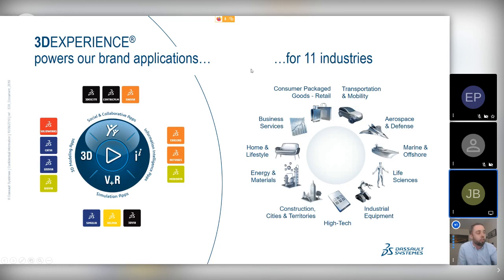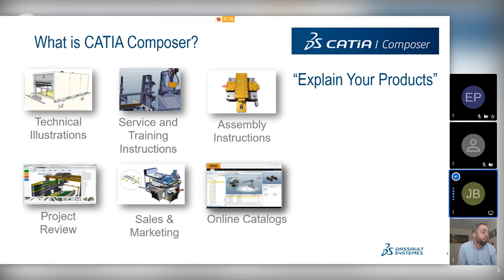The 3D Experience Platform powers specific brands within those quadrants: social and collaborative, 3D modeling, simulation, and information intelligence apps. Today we're focusing on the west quadrant, specifically within CATIA — and specifically within CATIA Composer, which is our 3D technical communication software. We serve 11 specific industries, marrying industry expertise with our applications and tool sets to bring solutions to customers and partners. I'll now hand over to Joachim.